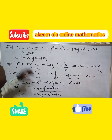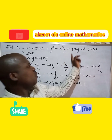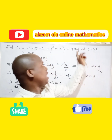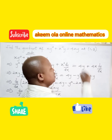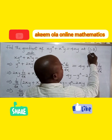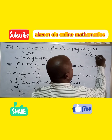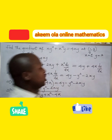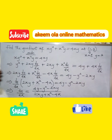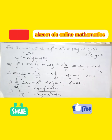Now the question asks us to find the gradient at the point (1, 3), where x equals 1 and y equals 3. We are going to substitute these values into the expression for dy/dx.